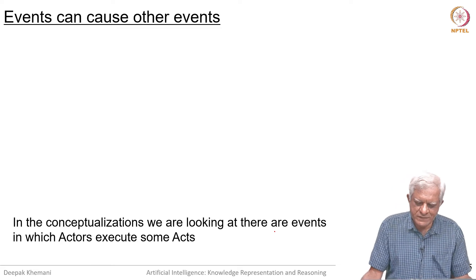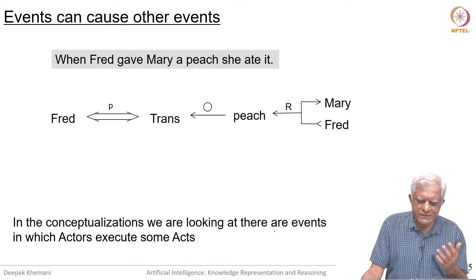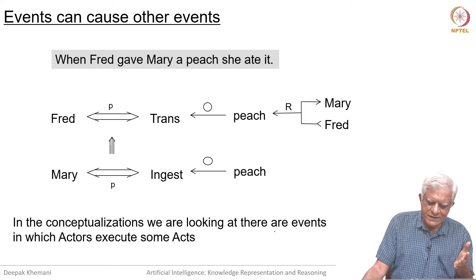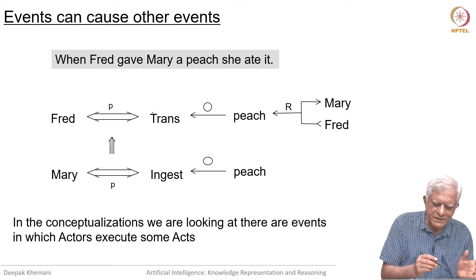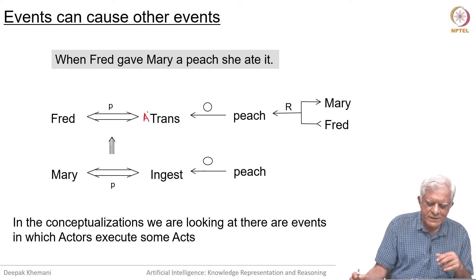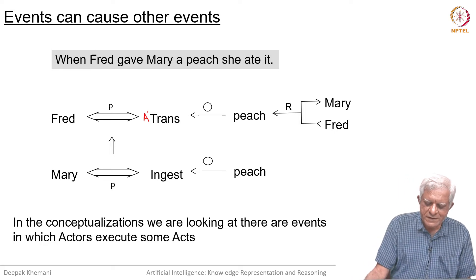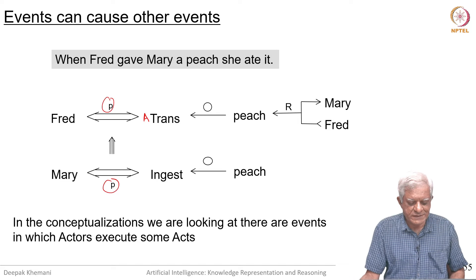Events can cause other events to happen. So when Fred gave Mary a peach, she ate it. The first event is Fred transed a peach — ideally it should be an atrans or ptrans, more likely an atrans that gave possession to Mary — as a result of which Mary ate the peach, and all this is happening in the past tense.